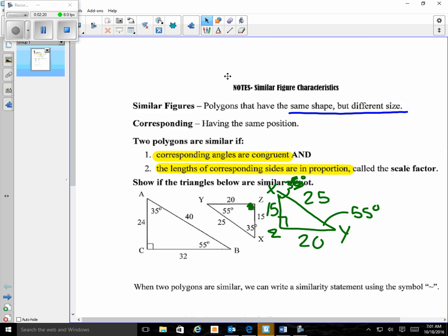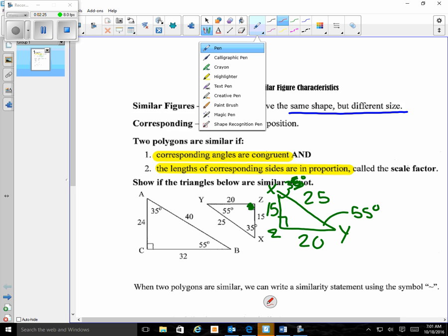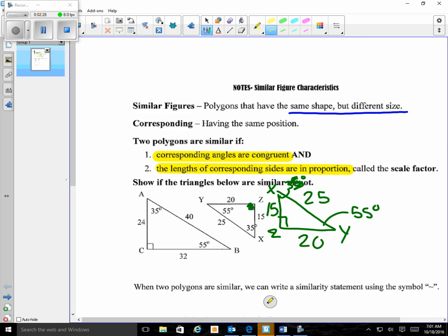So when I said you needed highlighters, here's why you need highlighters. You are going to highlight corresponding sides. All that means is you're going to highlight the same side on both triangles at this point. So like AC, I'm going to highlight it, which is corresponding to XZ. Then I'm going to switch colors and I'm going to do one more side. I'm going to do CB, which is ZY.